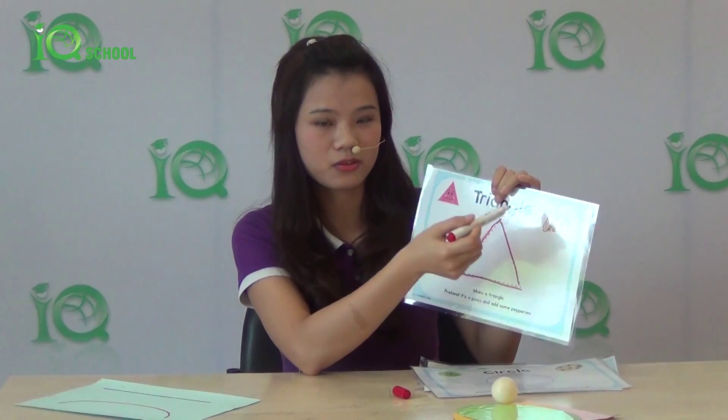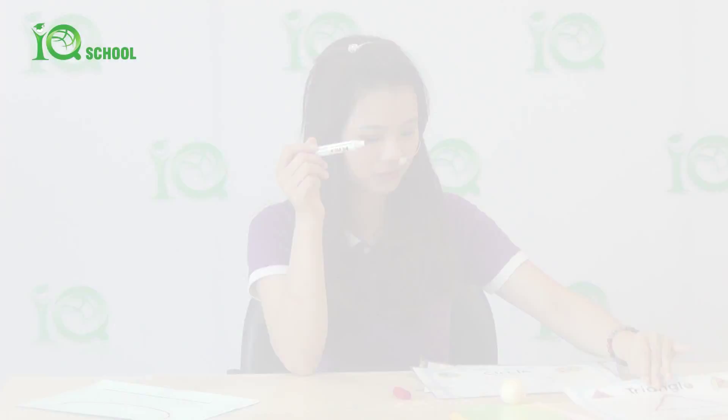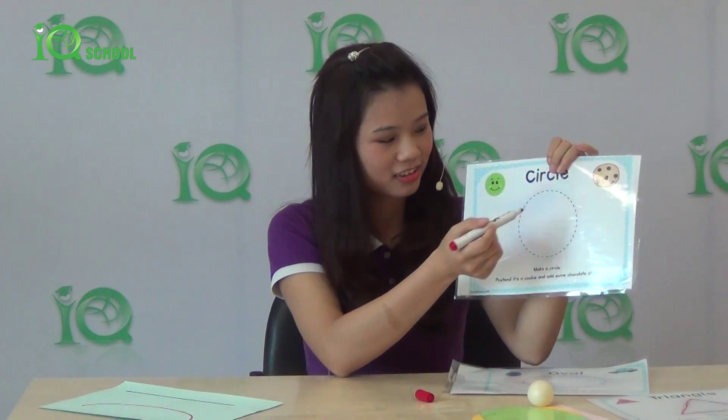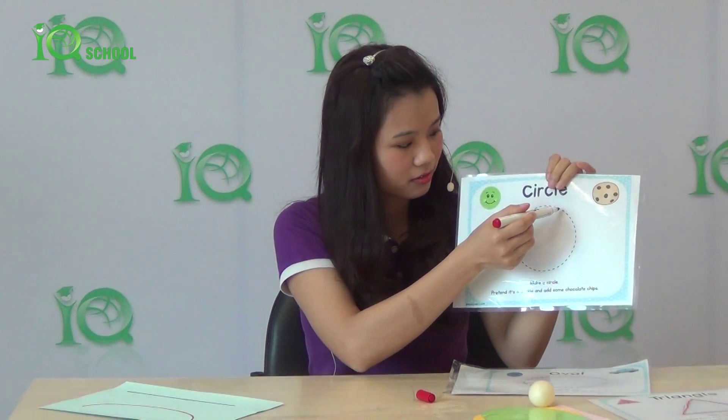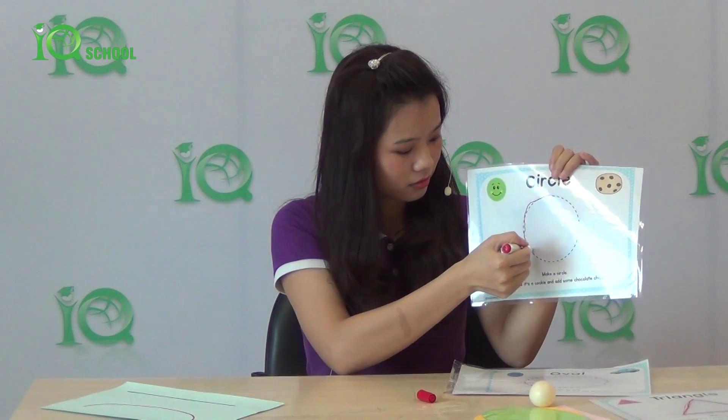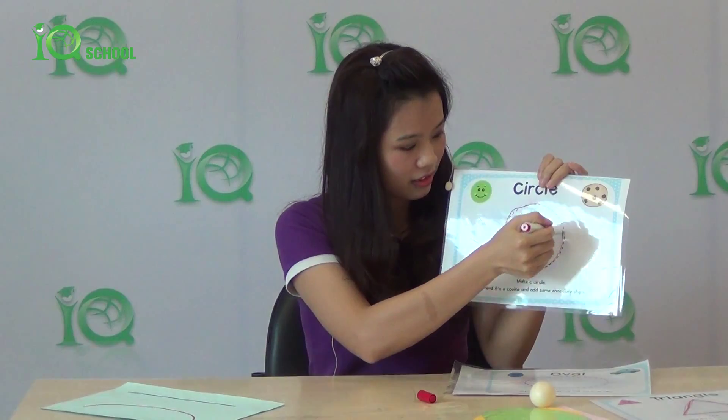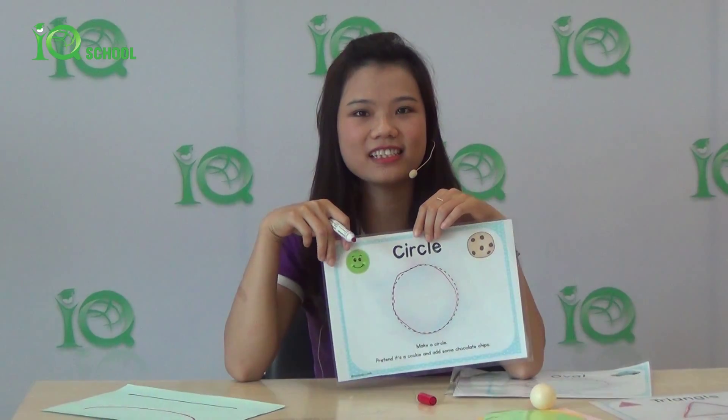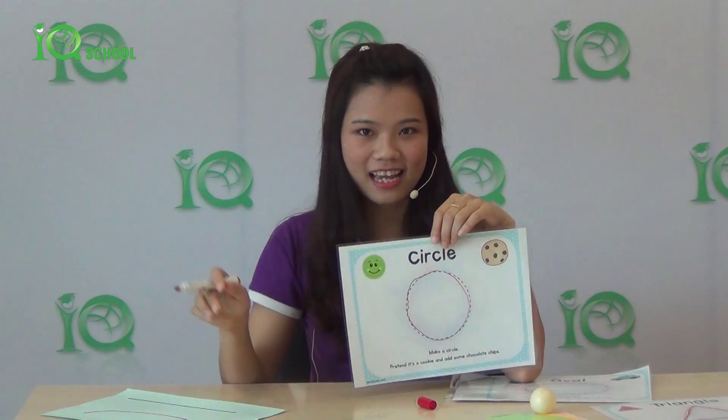It's like a pizza. And look at the second one. I have a circle, so I can draw a circle here. A circle is a curve, no side. It's a curve, and it's like a cookie. Well done, children.